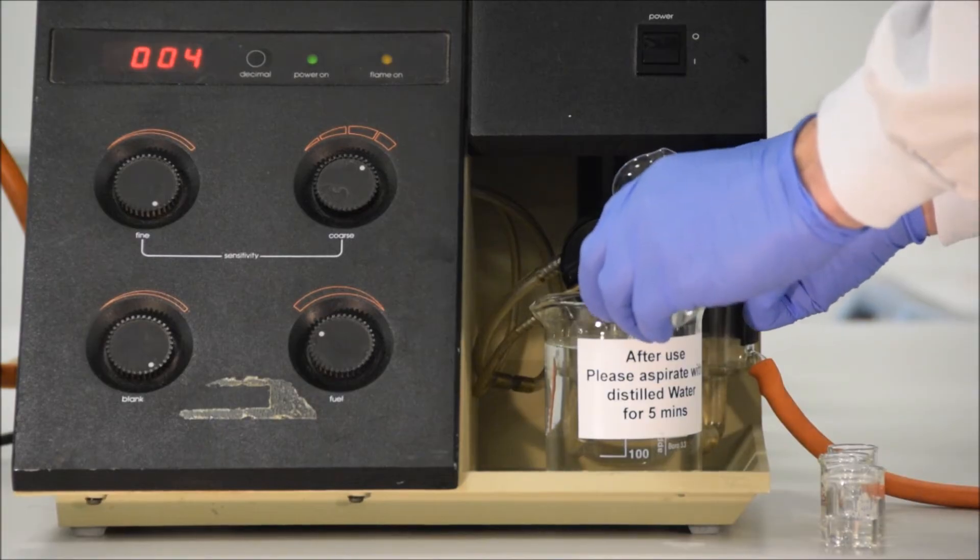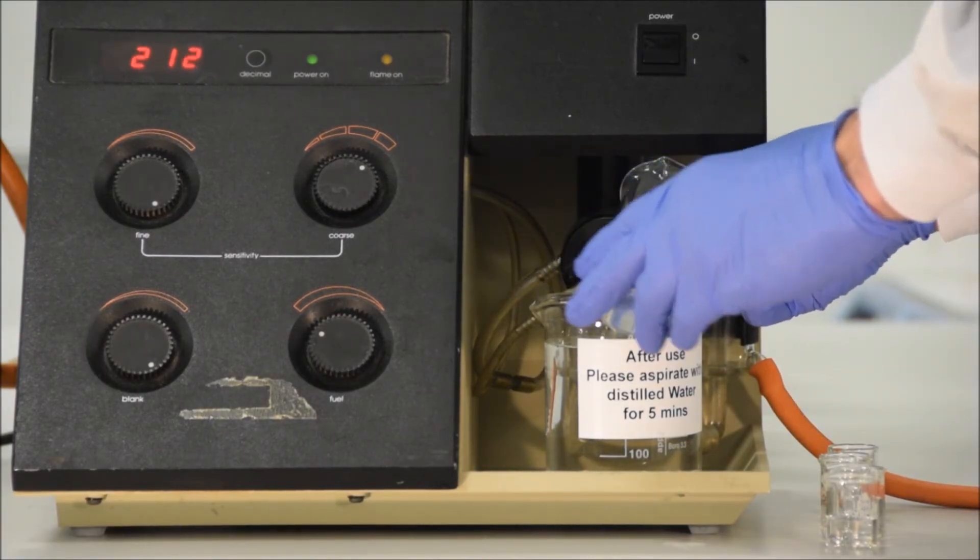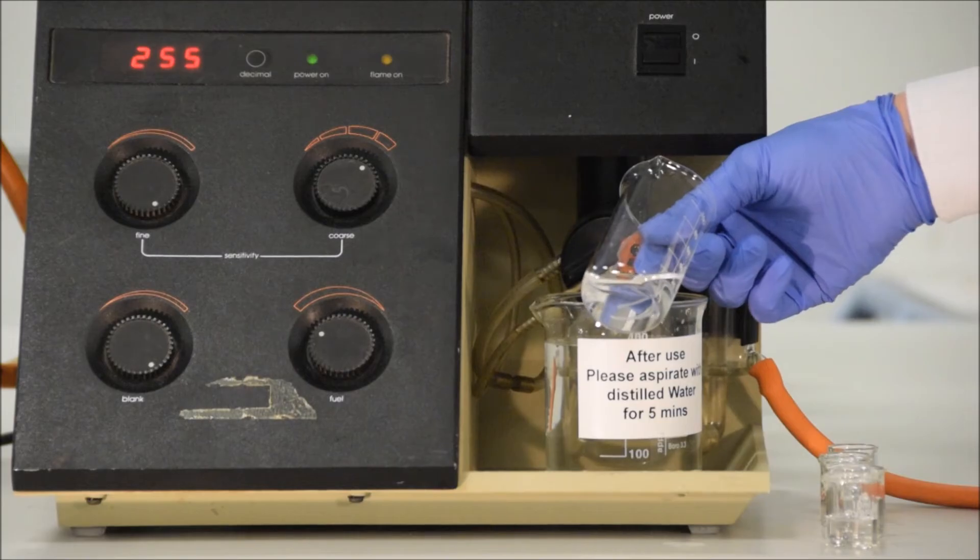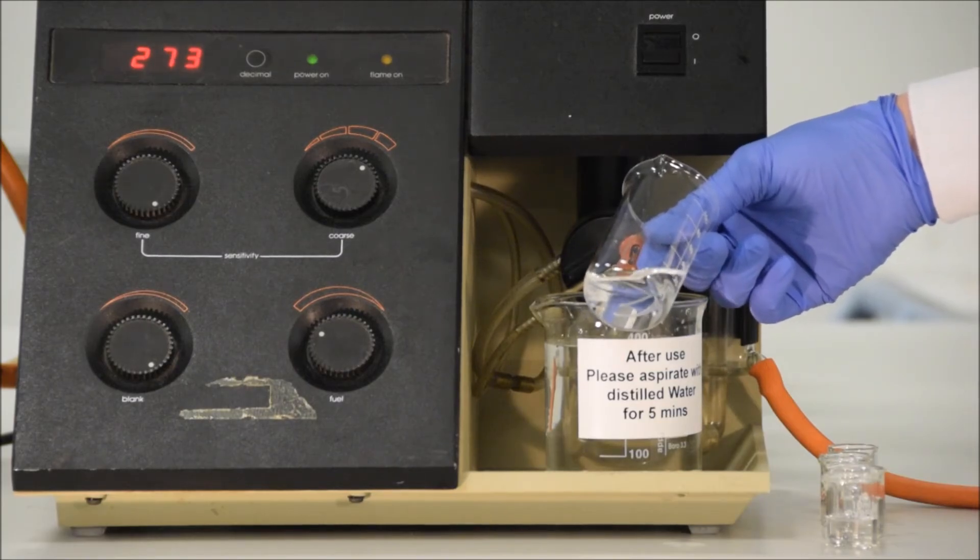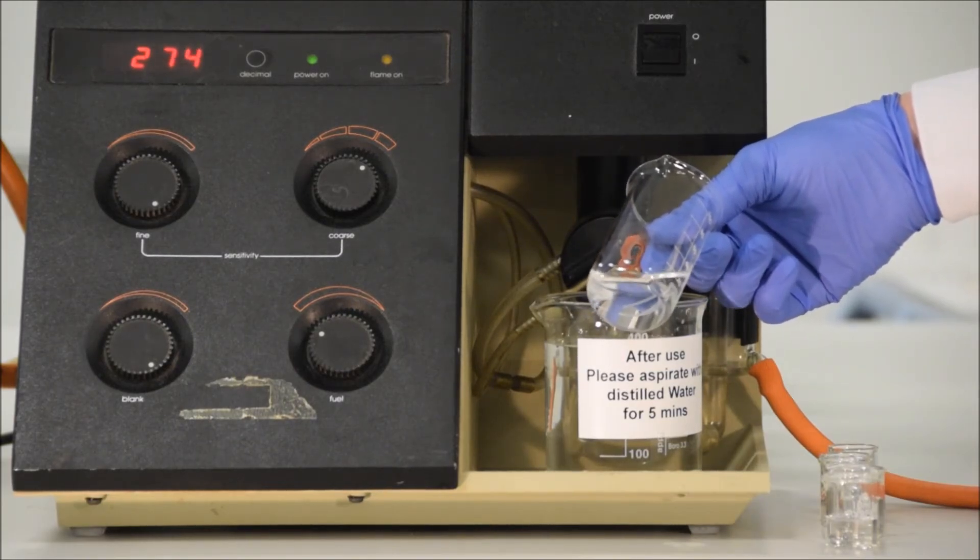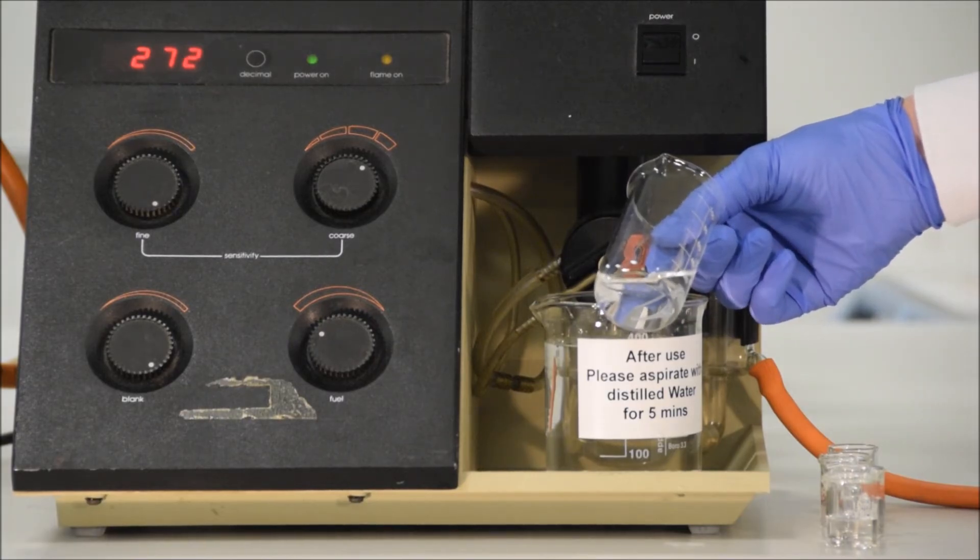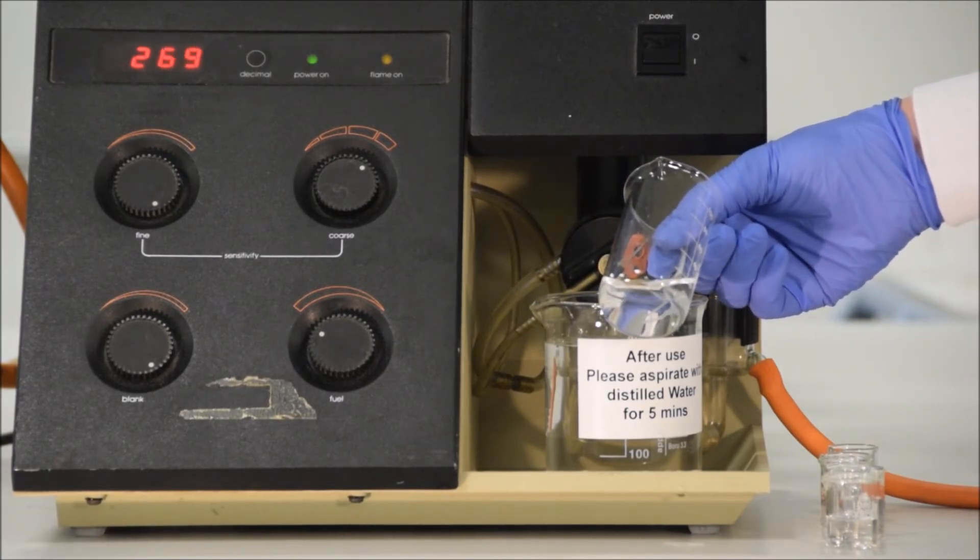Finally then, let's do our unknown sample. We follow exactly the same procedure. Aspirate for 20 to 30 seconds, wait till we have a consistent value, and then record that value. Once we're finished, return the inlet tube to the distilled water, and wait for at least 5 minutes until you turn the machine off.